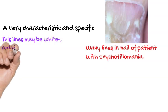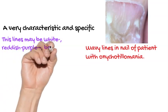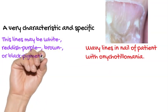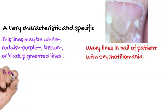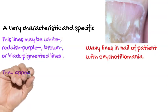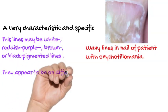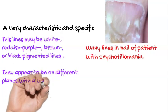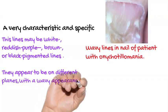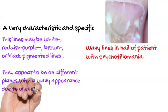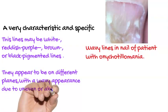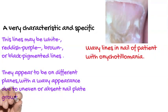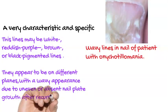These lines may be white, reddish, purple, brown, or black pigmented lines. They appear to be on different planes with a wavy appearance. This is due to uneven or absent nail plate growth after recurrent trauma.